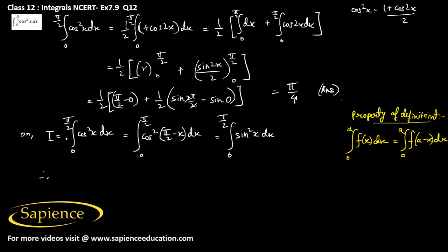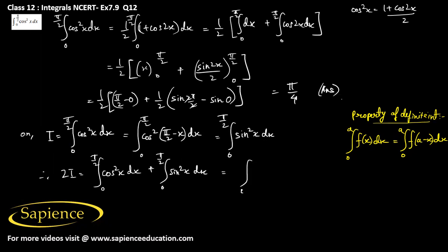Now if we add this integral to the original, we get 2I. So 2I equals the integral from 0 to π/2 of cos²x dx plus the integral from 0 to π/2 of sin²x dx. This combines to the integral from 0 to π/2 of (sin²x + cos²x) dx. Since sin²x + cos²x = 1, it reduces to the integral of dx from 0 to π/2.